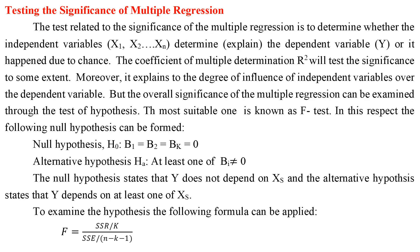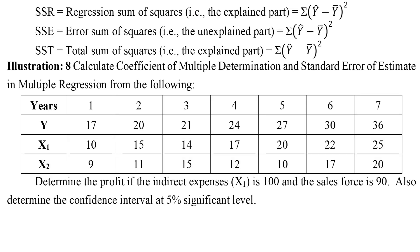Testing the significance of multiple regression determines whether the independent variables x1, x2, ..., xn actually explain the dependent variable y or if it happened by chance. R² tests significance to some extent. The overall significance is examined through F-test hypothesis testing. Null hypothesis H0: b1 = b2 = ... = bk = 0. Alternative hypothesis Ha: at least one b ≠ 0. The null hypothesis states that y does not depend on xs; the alternative states y depends on at least one x.